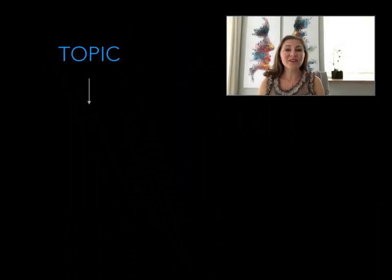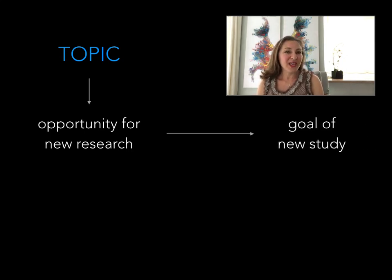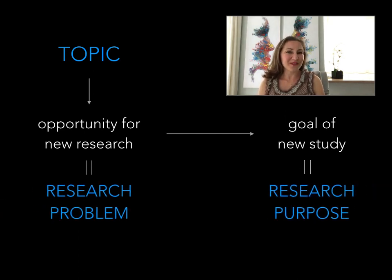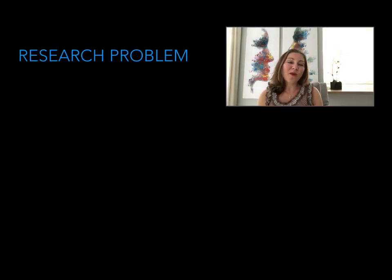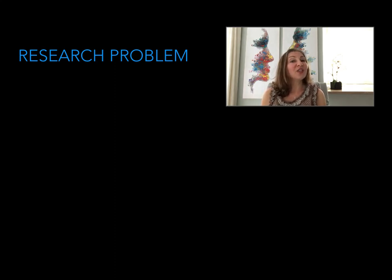Once the topic is clearly defined, the researcher is able to identify an opportunity for new research within that topic, and this opportunity then becomes the goal of their study. The opportunity is known as the research problem, and the goal is known as the research purpose. The word 'problem' should not imply that there's something wrong with the scholarship — usually it refers to a gap in knowledge or understanding, something that remains unclear or has yet to be investigated, maybe a variation or an alternative context. Preparing a literature review on the topic is very helpful in identifying a problem or problems.